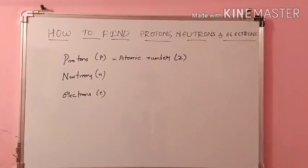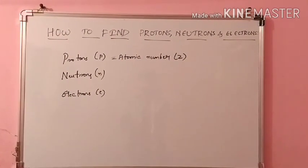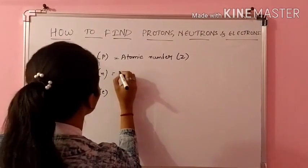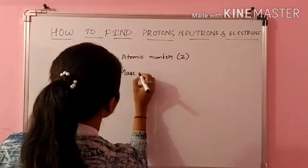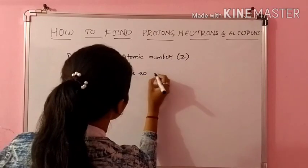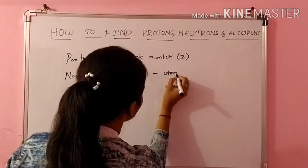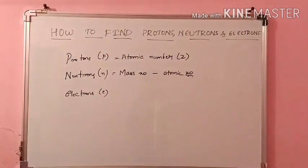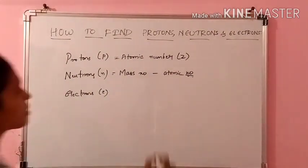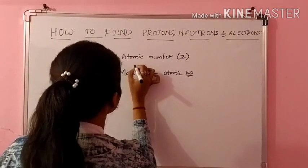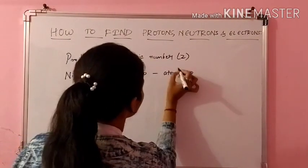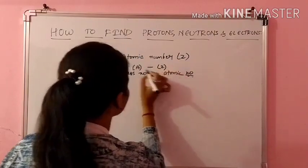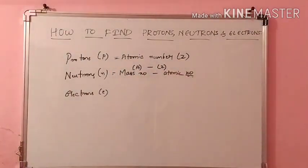Coming to neutrons. Neutrons is nothing but what you have to do is subtract mass number minus atomic number. Mass number is represented by capital A, and atomic number is represented by Z. So neutrons equals A minus Z.